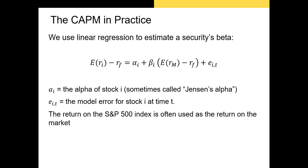In the last video, I covered the model form of the CAPM. Now I need you to understand the regression form of the CAPM, which we're going to use to actually calculate alpha — the Greek letter alpha — and beta.